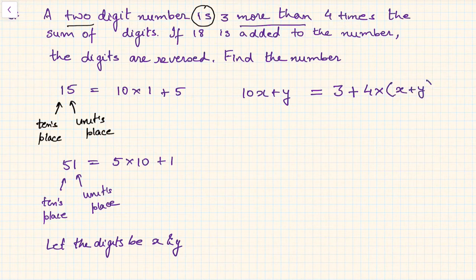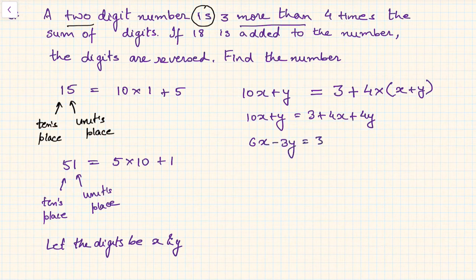So now simplify this. You will get 10x plus y equals 3 plus 4x plus 4y. So if you simplify further you will get 6x minus 3y equals 3. This implies 2x minus y is equal to 1, dividing the entire equation by 3. So this is equation number 1.